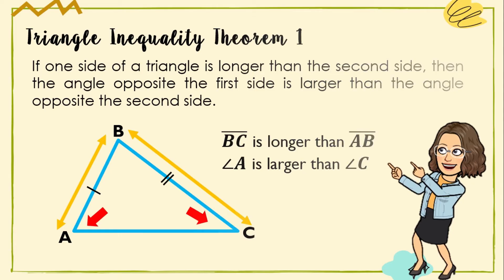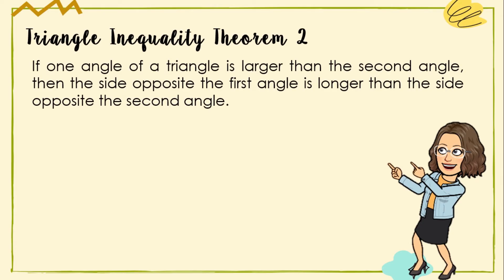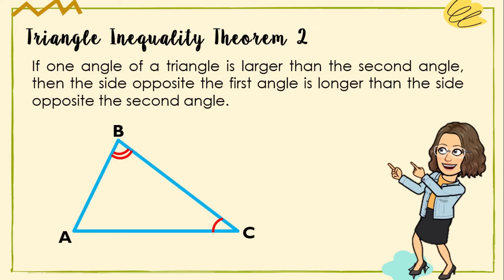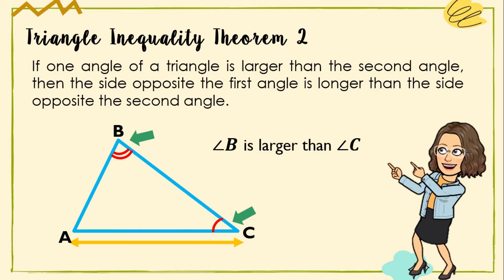Next, Triangle Inequality Theorem 2 states that if one angle of a triangle is larger than the second angle, then the side opposite the first angle is longer than the side opposite the second angle. In the given triangle, angle B is larger than angle C. By applying this theorem, we can say that side AC is longer than side AB.